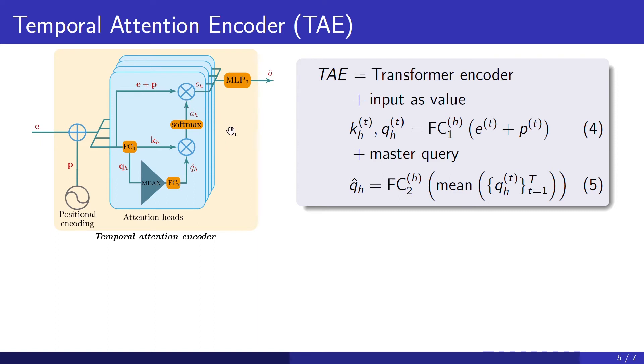Second, since we want to map a sequence to a label, we would like our self-attention mechanism to produce a single output, and we propose to do that by computing a single attention mask for the whole sequence. To obtain this attention mask, we first compute a master query q hat by taking the temporal average of the queries of each element of the sequence and process the results with a linear layer fc2, and use this master query q hat to produce the attention mask that is used to produce the output of the attention mechanism.